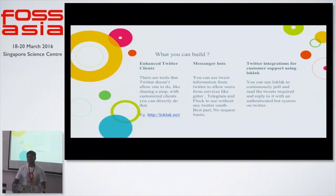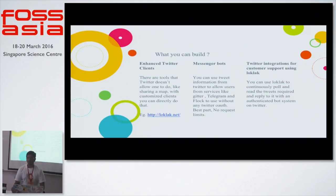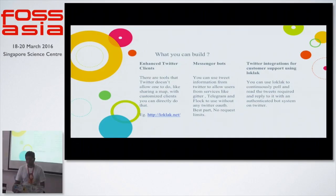LOKLAK keeps pulling the data, analyzes it, and you can have a bot which replies back. In case there is less information — for example, if I post a tweet saying there is an open manhole at a particular address but it misses the picture as proof — it tweets back to the user asking for an image. Once you provide the image, LOKLAK pulls it back and can check: probably we can do something about this.